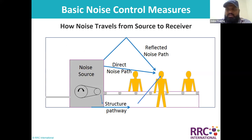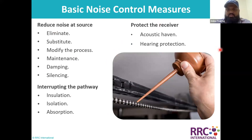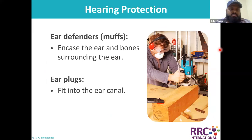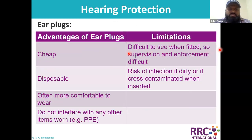We discussed how we get exposed to noise from machinery — three ways: structure path, direct noise path, and reflected noise path. Then we discussed how to control noise at the source, at the pathway, and at the receiver. We also discussed hearing protection including ear defenders or muffs and ear plugs, including the advantages and disadvantages of both.